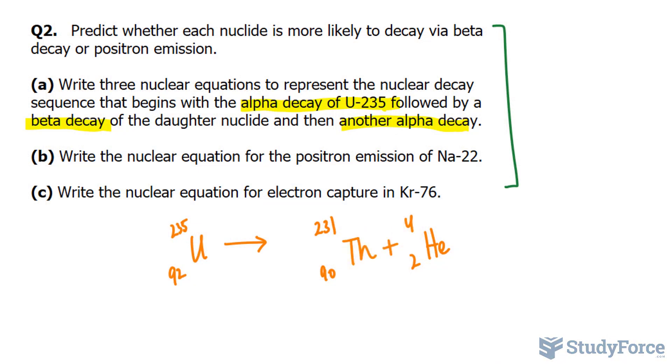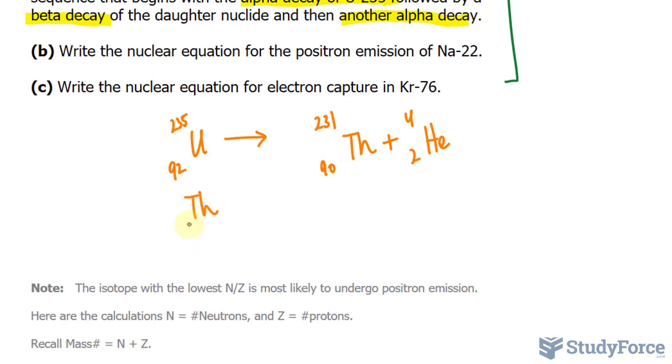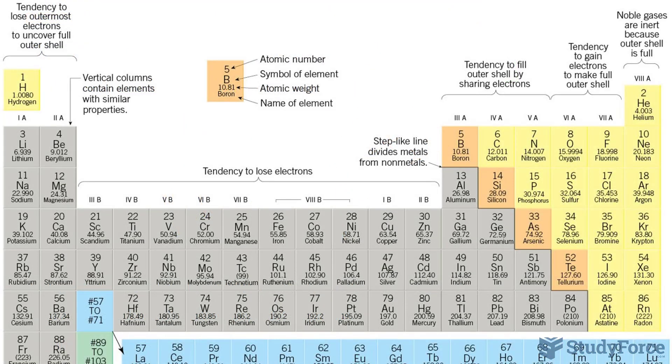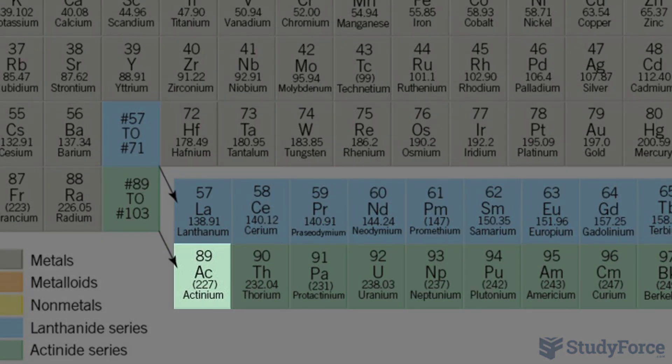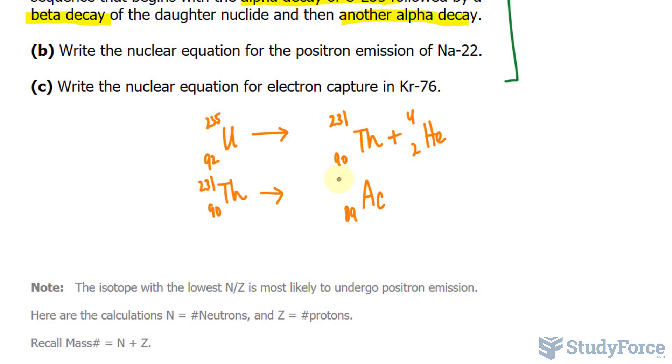The next one is beta decay, so the nuclide here is thorium-231. In a beta decay, the atomic number goes up by one. So rather than 90, it becomes 91. The 91st element is actinium. Its atomic mass will remain the same, 231. Remember, during a beta decay, one of the neutrons in the nucleus suddenly changes into a proton, causing an increase in the atomic number. We'll account for the difference by writing down E, negative 1, and its mass is 0.